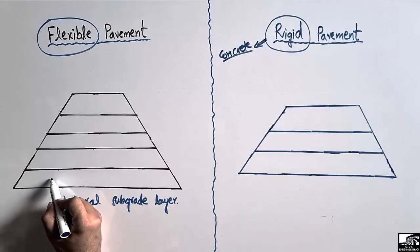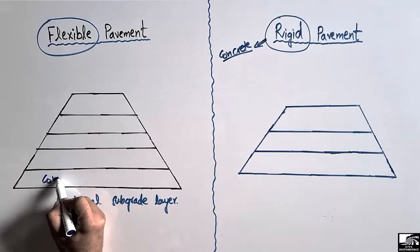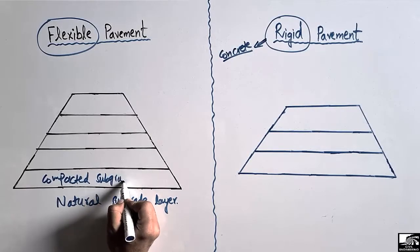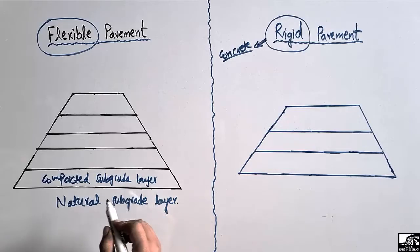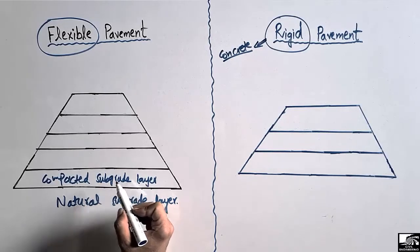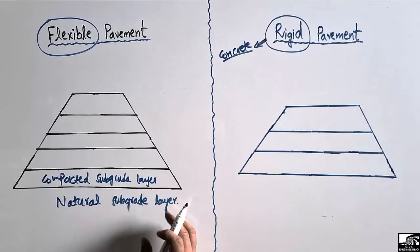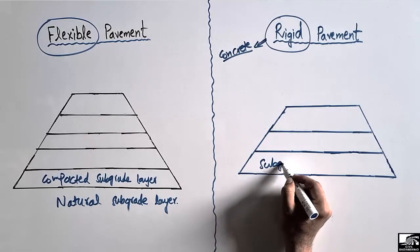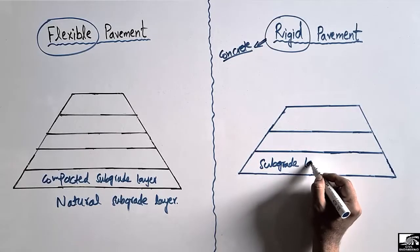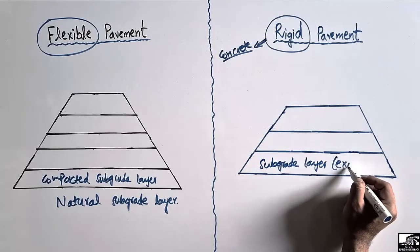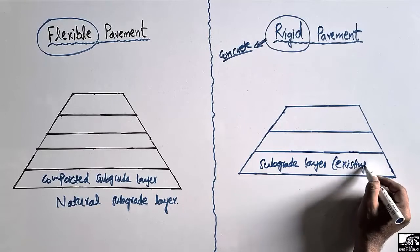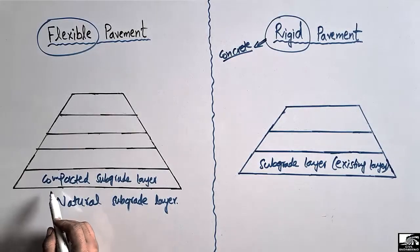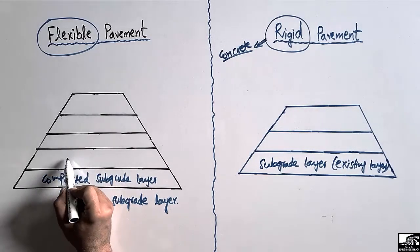On top of the natural subgrade layer in flexible pavement, there is a compacted subgrade layer, which has been compacted to a certain level to achieve a certain degree of compaction. In the case of rigid pavement, we also have a subgrade layer, and this layer may be an existing layer depending on the condition of the site.